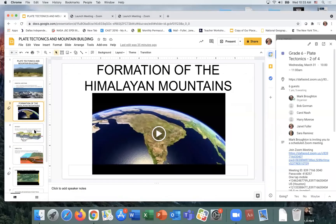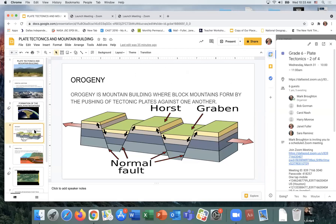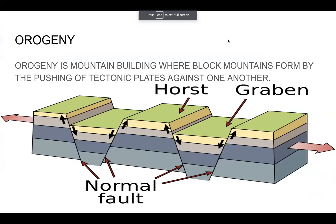Now let's talk about a different kind of orogeny — the kind for divergent boundaries, where plates move apart. Orogeny is mountain building where block mountains form. This occurs at places with normal faults. The part that bulges upward is called a horst — a Dutch and German word meaning 'heap.' The part that goes down is called a graben — a Dutch and German word meaning 'dig.' So the horst forms upward into a heap, and the graben looks like it's been dug out.